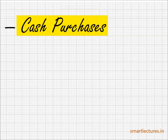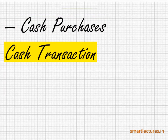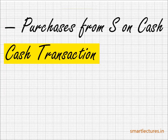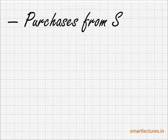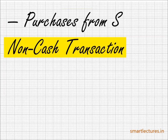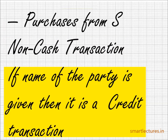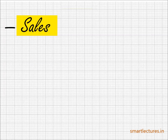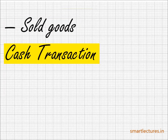Cash purchases: it's clearly given — goods have been purchased and cash was paid immediately. Next: 'purchases from S on cash' — goods have been purchased from S on cash; it's clearly written 'on cash,' so this is a cash transaction. Next: 'purchases from S' — it has not been mentioned whether cash was paid, but the name of the party S is given, meaning this is a credit transaction. So to summarize: if it says 'purchased goods' or 'sold goods' without a party name, that is a cash transaction. If the name of the party is given, it means that is a credit transaction.